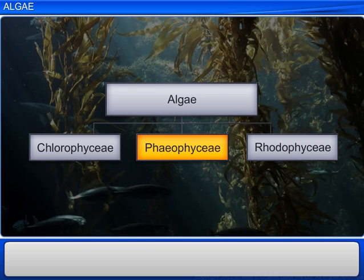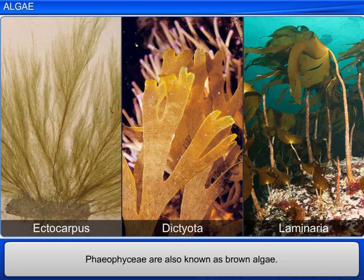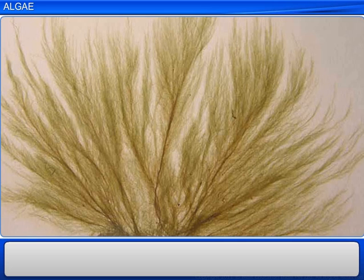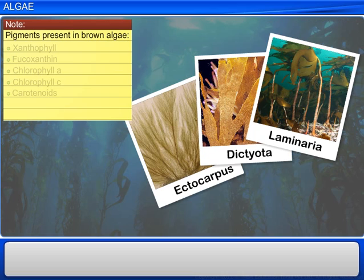Phaeophyceae is another class of algae, and Ectocarpus, Dictyota, and Laminaria are some of its members. These species, commonly termed as brown algae, are mostly found in brackish or salt water. They display a wide variety in form and size — for instance, Ectocarpus displays filamentous form, whereas Kelps are profusely branched and can measure 100 meters in height. They also vary in color due to the varying concentrations of the pigments xanthophylls and fucoxanthin. Apart from these pigments, chlorophyll A, C, and carotenoids are the other major pigments found in brown algae.